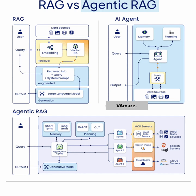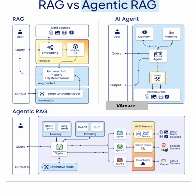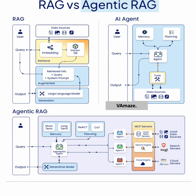The agent within the Agentic RAG structure can reason through tasks, plan, and dynamically generate responses based on accumulated knowledge, making it an adaptive, powerful tool for complex tasks.